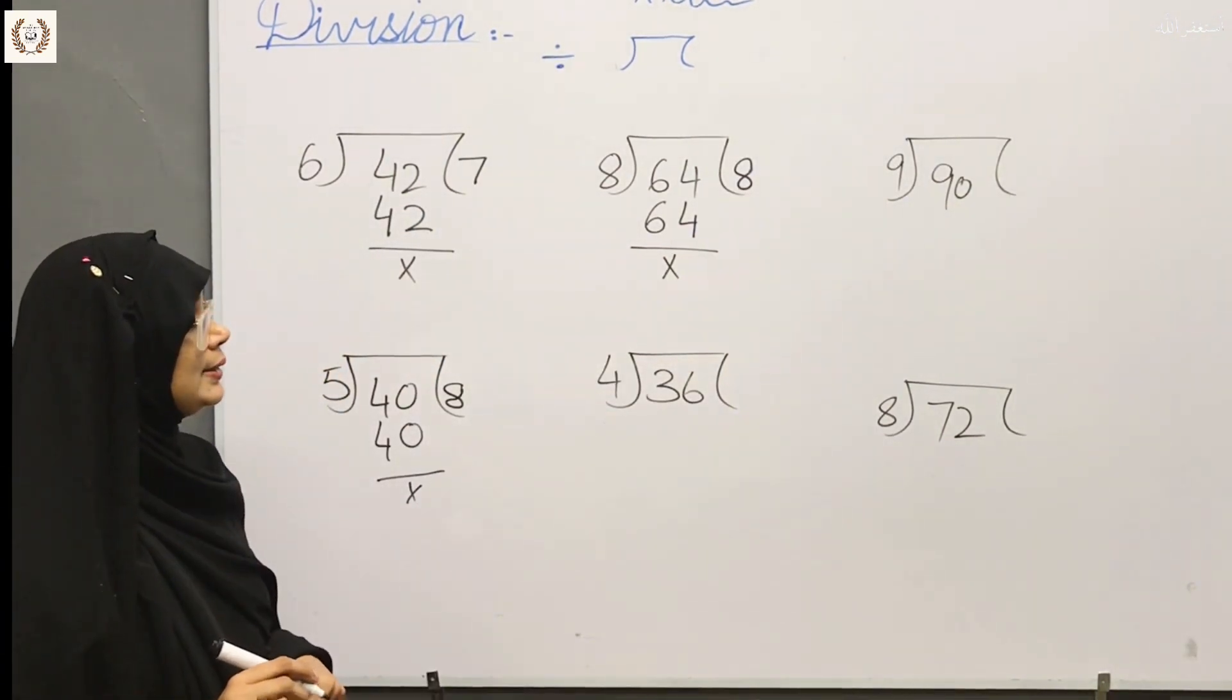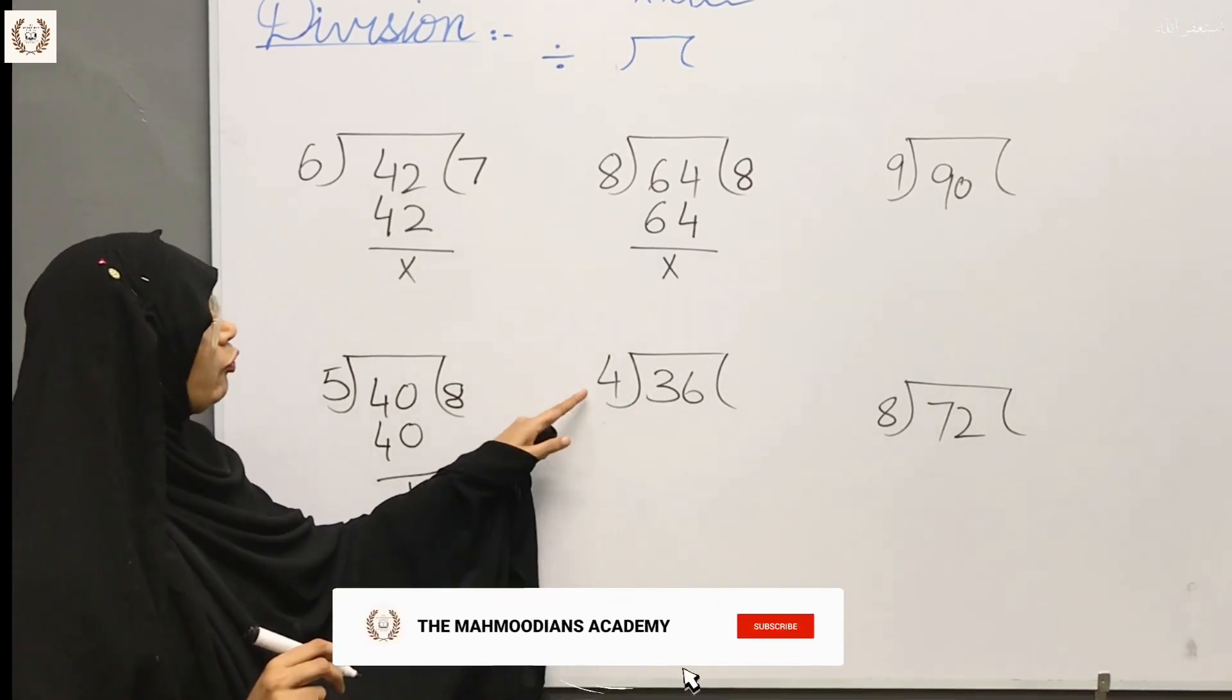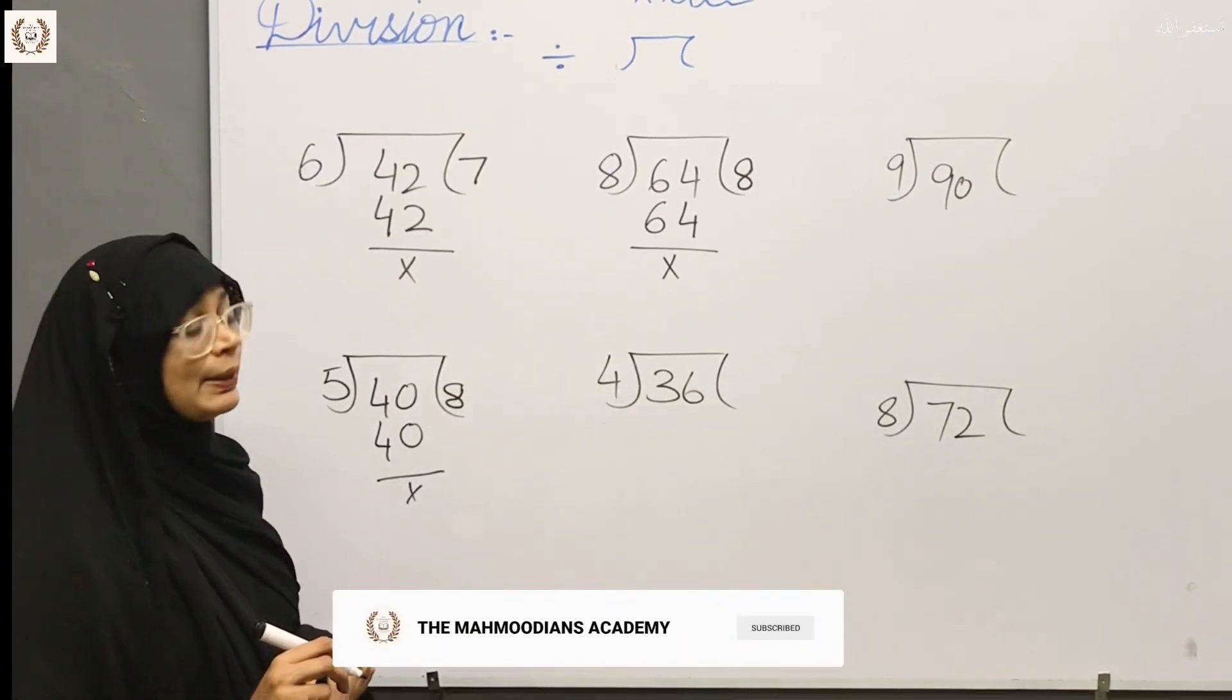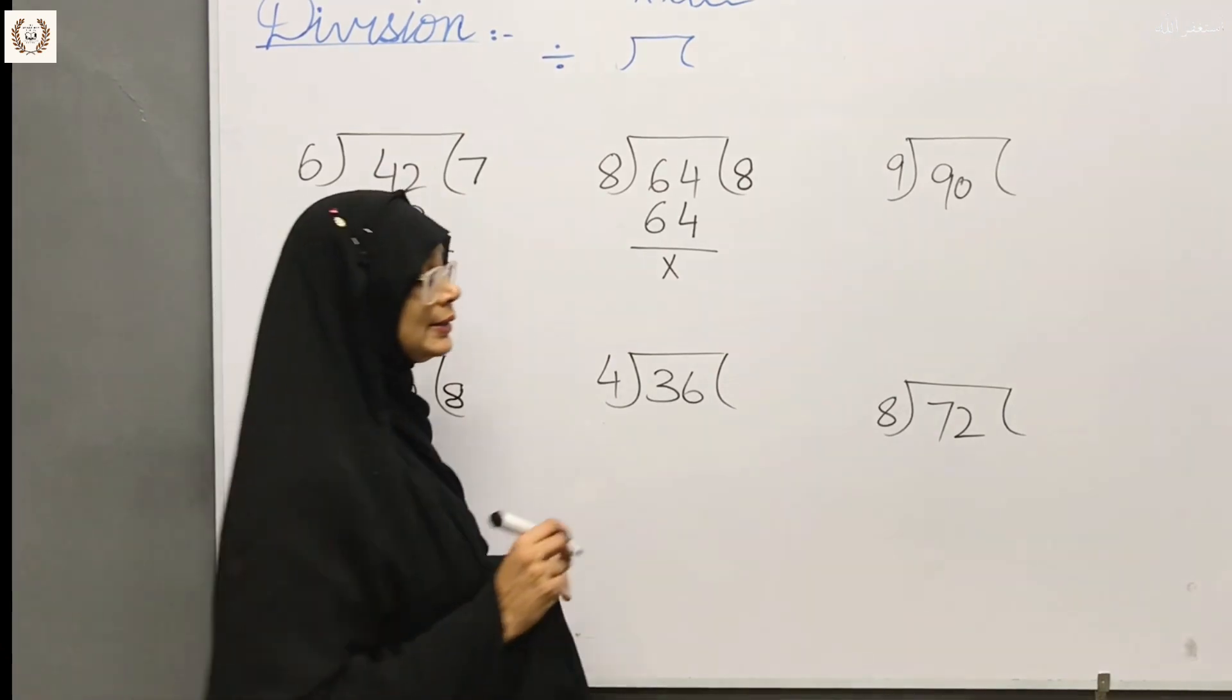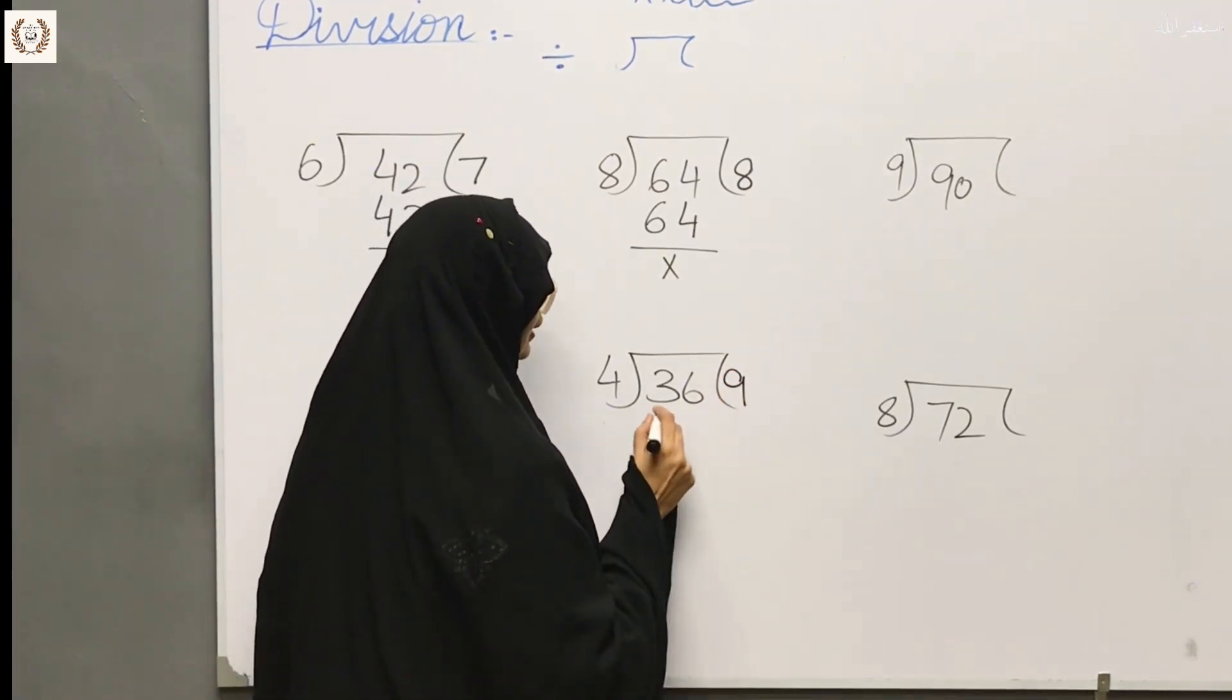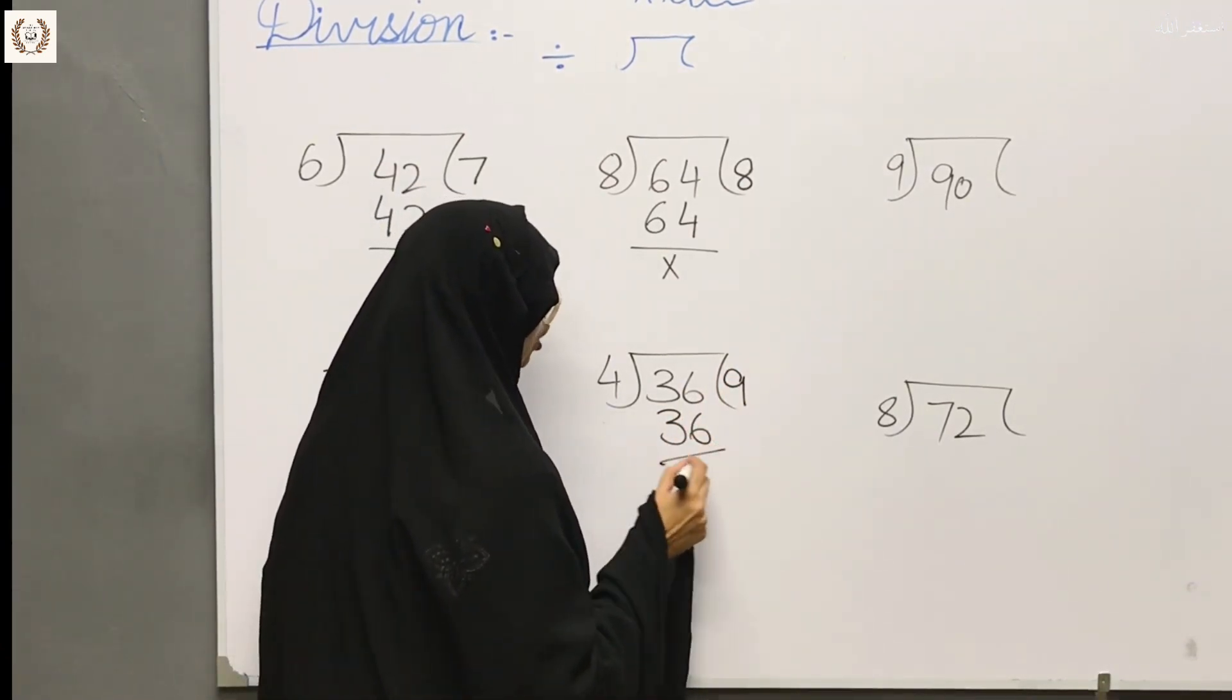Next sum is 36. 4 is outside. 36 is inside, then finish.